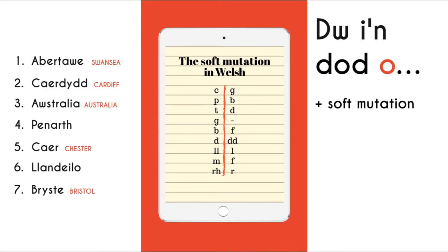Let's look at how to say where you are from. If I want to say 'I am from' in Welsh, I say, Dwi'n dod o. Now, the preposition o means 'from' in Welsh, and triggers a soft mutation. Look at the soft mutation chart here in the middle. This means that after o — meaning 'from' — all words starting with the letter C would change to G, all words starting with P would change to B. Other letters not in the chart would not be affected at all. Remember, this happens only after the preposition o.